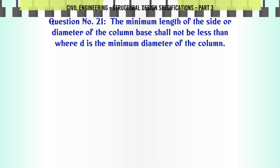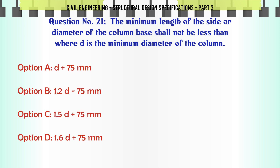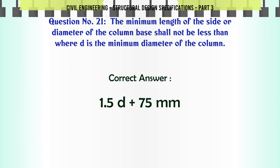The minimum length of the side or diameter of the column base shall not be less than, where d is the minimum diameter of the column: a. d + 75 mm, b. 1.2d + 75 mm, c. 1.5d + 75 mm, d. 1.6d + 75 mm. The correct answer is: 1.5d + 75 mm.